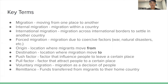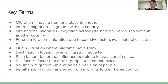A push factor is a factor that influences people to leave a certain place, and the pull factor is what attracts people to a certain place. Voluntary migration is migration as a decision of people and individuals, and remittance is the funds transferred from migrants to their home country.